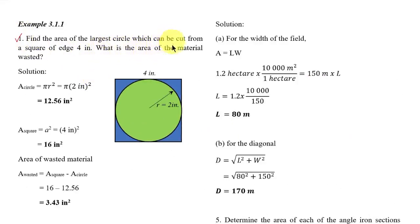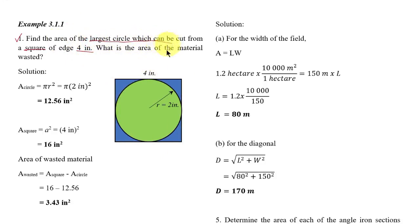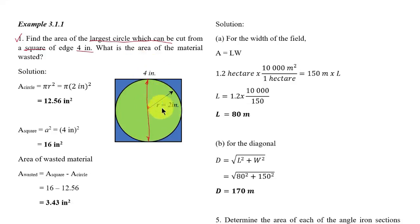Example 3.1.1: Find the area of the largest circle that can be cut from a square of edge four inches. What is the area of the material wasted? We have a square with an edge of four inches. The largest circle that can be cut from the square has a diameter equal to the edge of the square, so the radius is 4/2 = 2 inches.